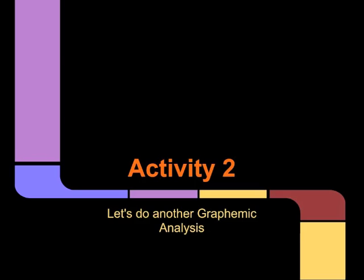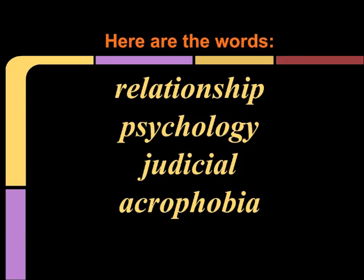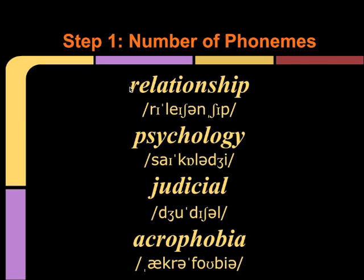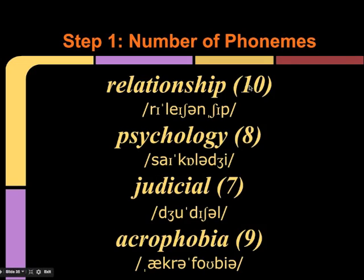Let's do another graphemic analysis, this time looking at words that come from a Latin, Greek, or French via Latin basis. Here are four words: 'relationship,' 'psychology,' 'judicial,' 'acrophobia.' First we're going to count the number of phonemes — we've placed the IPA spelling on the screen. With many Greek and Latin words, the number of sounds is much closer to the number of letters. For example, in 'relationship,' counting the letters gives us twelve, but the number of sounds is actually fairly close — ten sounds with twelve letters.